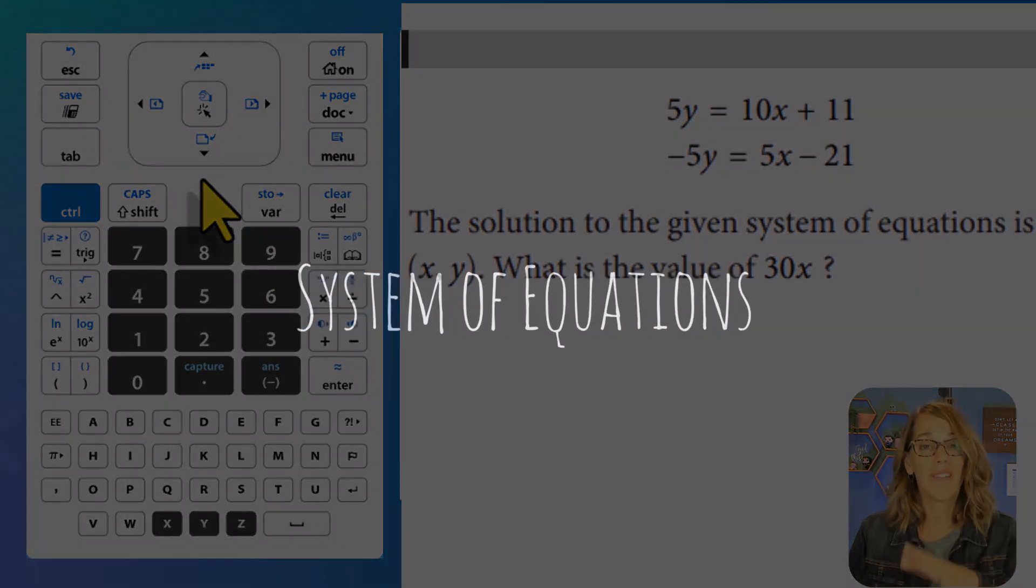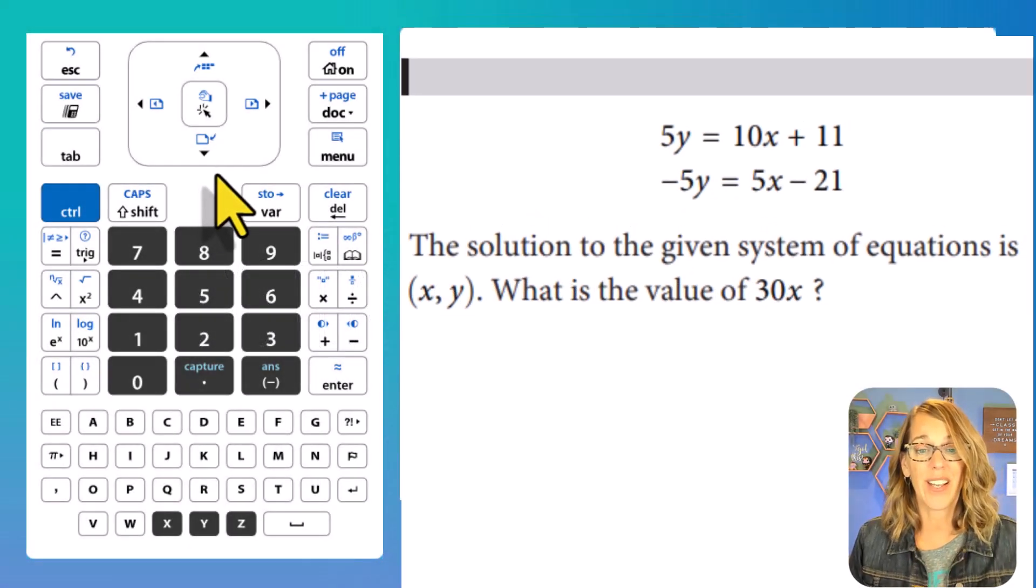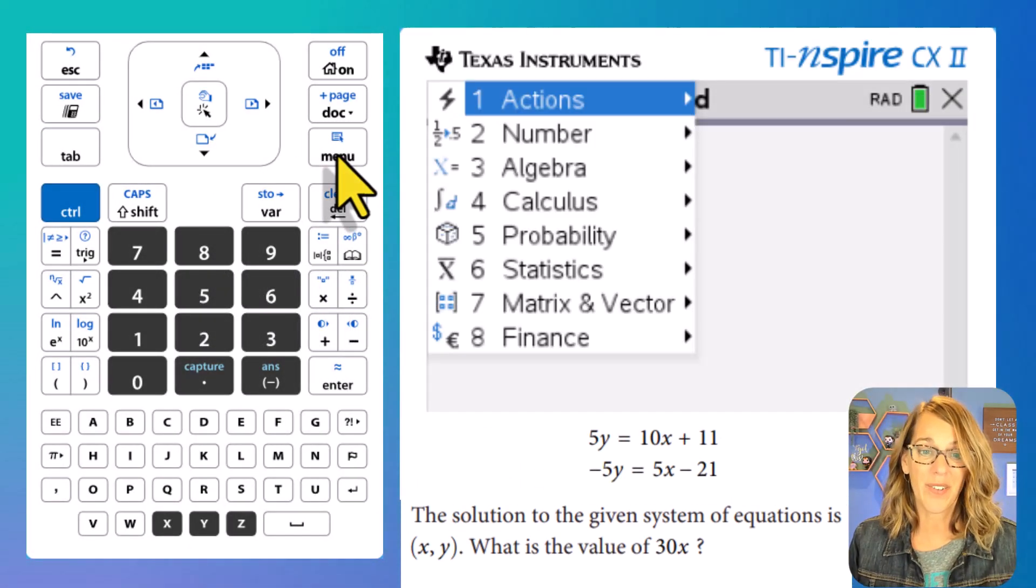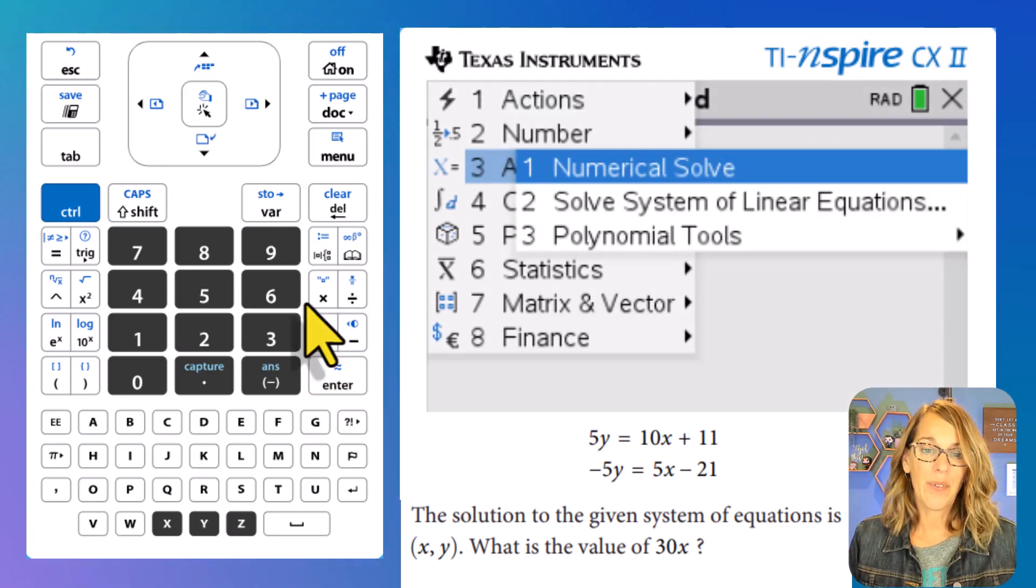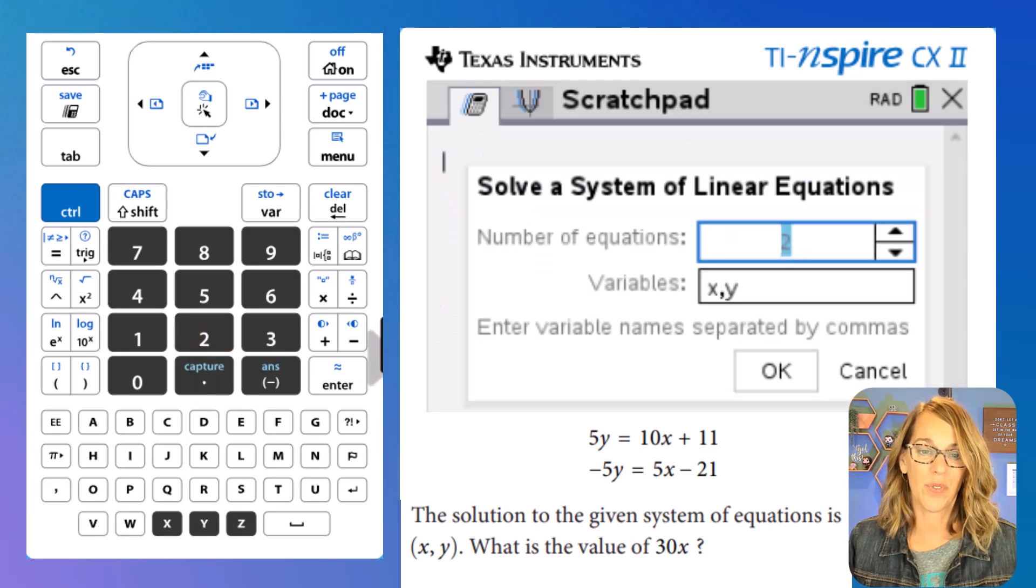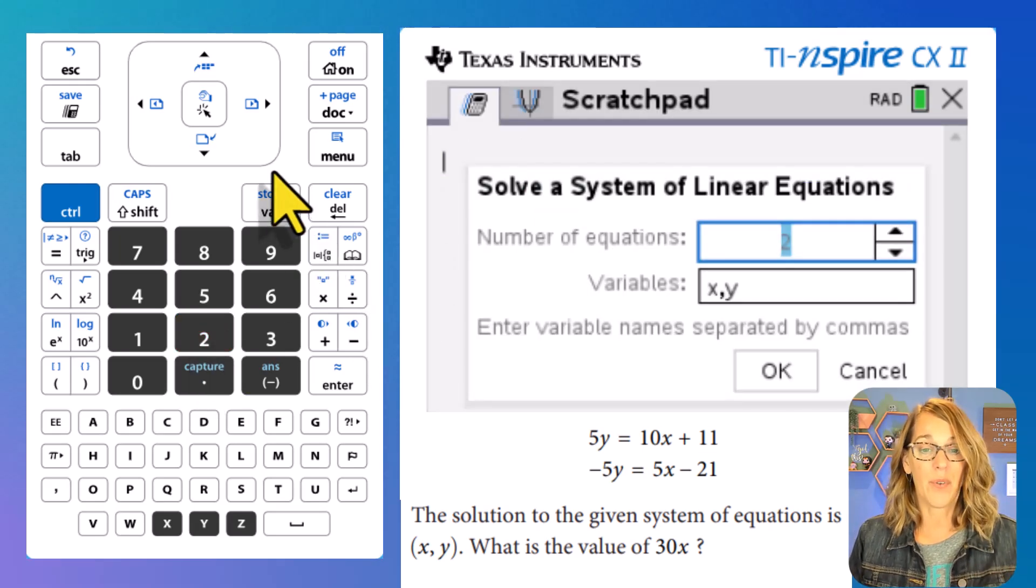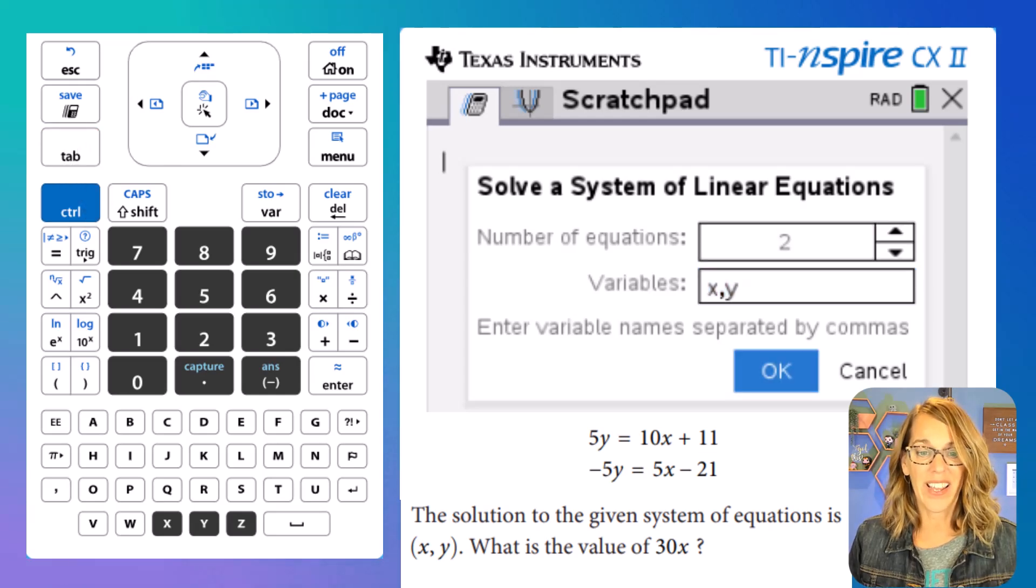Next we want to solve a system of equations and we're also going to be able to type this one right in using our algebra tools. So let's go to menu and then we want algebra, which is number three. And we want to solve a system of linear equations. So number two, it asks me for the number of equations. I do happen to have two, but you could change that one. And I do have variables X and Y and then we're going to hit OK. So enter.